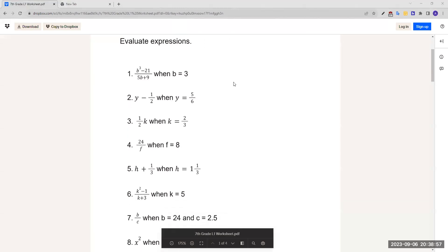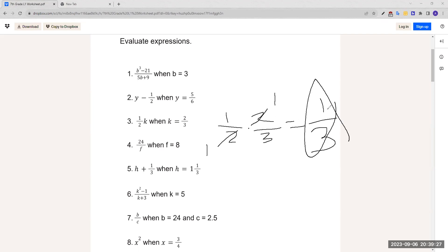Number 3: 1 half k when k equals 2 thirds. Since there's no addition or subtraction sign and they're just right next to each other, we just multiply it. In multiplication, you can just multiply it straight on without having to change the denominators. But to make it easy, we can simplify the 2 and 2 to 1 and 1. So that'd be 1 over 3.